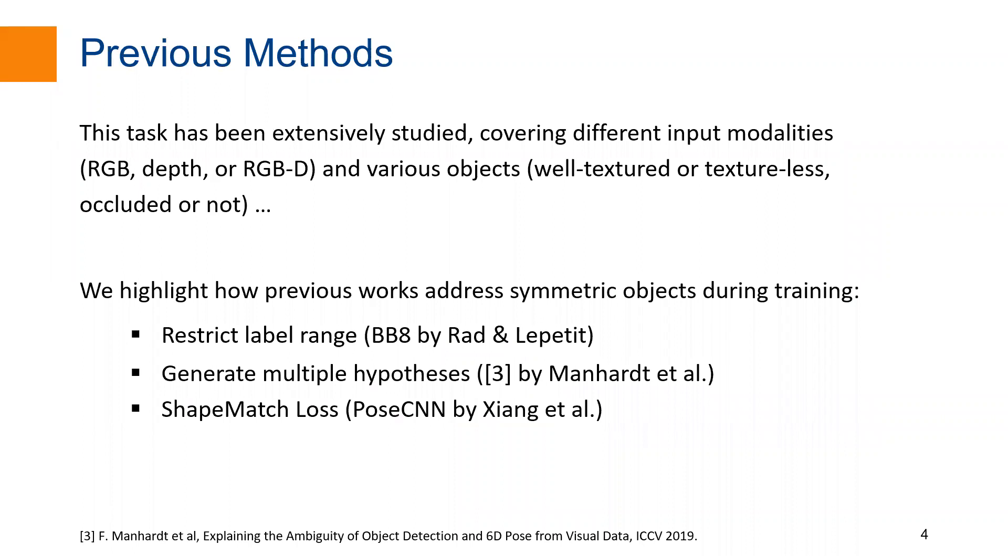There is a large body of work focusing on 6D object pose estimation. They have covered different input modalities, including RGB, depth, and RGBD. Objects that are well textured or texture-less, occluded or not, are also extensively studied. Given that our main contribution is on resolving the rotation ambiguity caused by symmetric objects, we would like to highlight how previous work deals with this ambiguity during training.